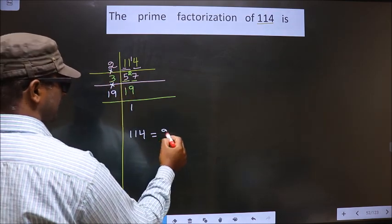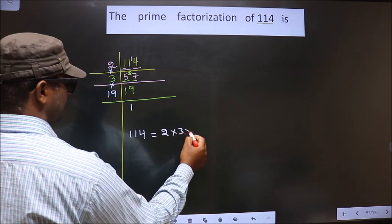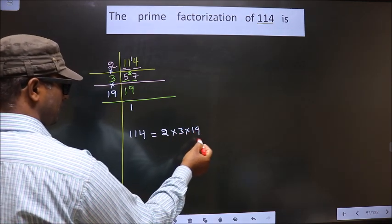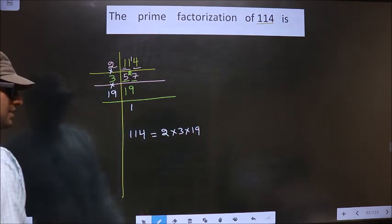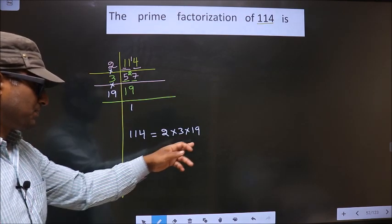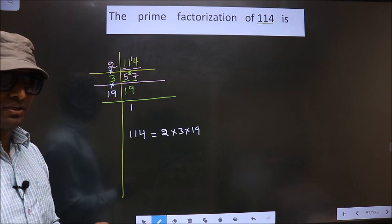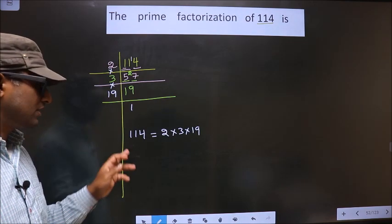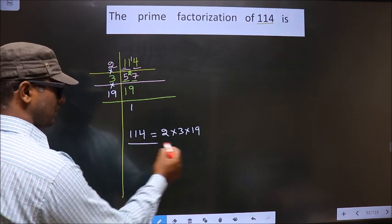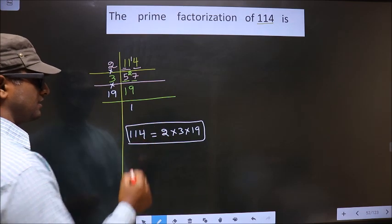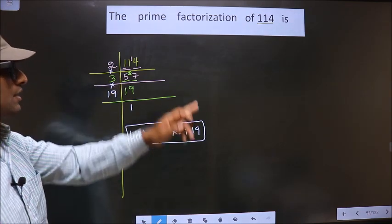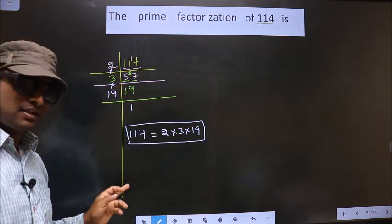So this is the prime factorization of 114. This is also called the product of prime numbers of 114. So this is our answer. Am I clear?